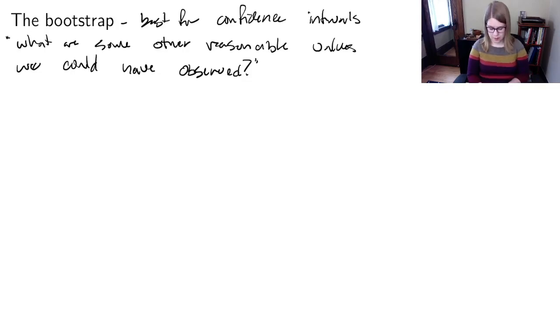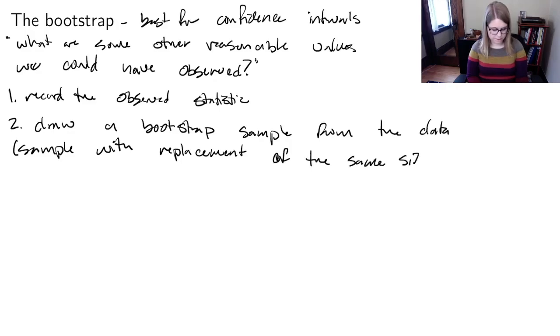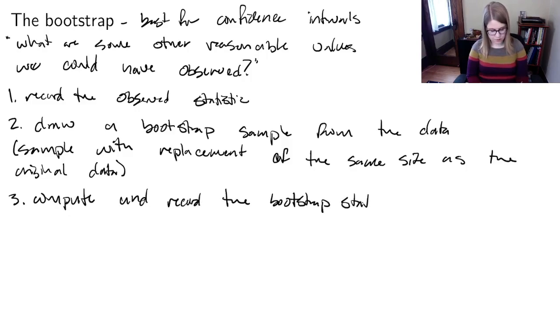The steps for the bootstrap are pretty similar to the steps for randomization. Step 1 is also to record the observed statistic. Then step 2 is to draw a bootstrap sample from the data—that is a sample with replacement of the same size as the original data. Step 3 is compute and record the bootstrap statistic. In the case of this class, that would be the slope for the x and y from the bootstrap sample.